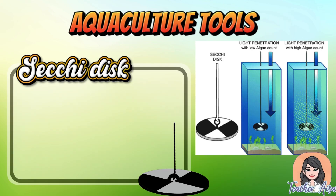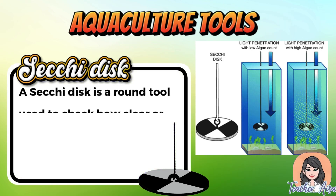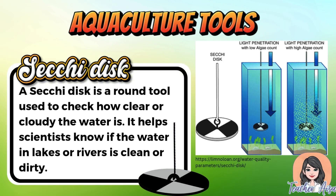A Secchi disc is a circular tool used to measure the clarity of water. By lowering it into lakes or rivers, scientists can determine how clear or cloudy the water is, helping them assess the cleanliness and quality of the environment.